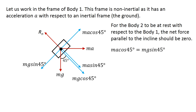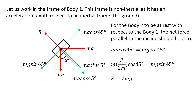Therefore, ma cosine 45 degrees equals mg sine 45 degrees. Keeping the value of a as p over 2m in this equation, we get p equals 2 times mg. Hence, for body 2 to remain at rest with respect to body 1, p should be 2 times mg.